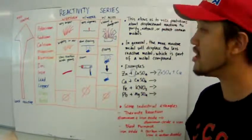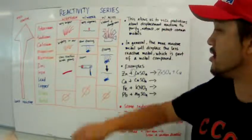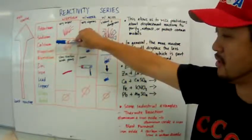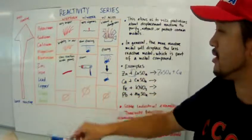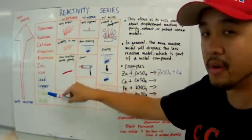What about calcium and copper? Where is calcium? Calcium is up here. Well, copper is also still down there. Calcium is more reactive than copper. So,